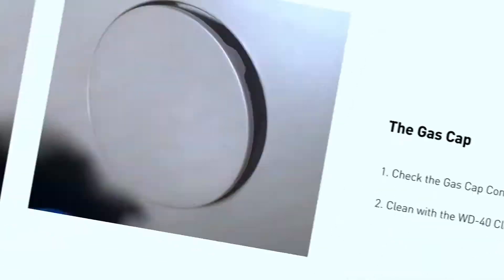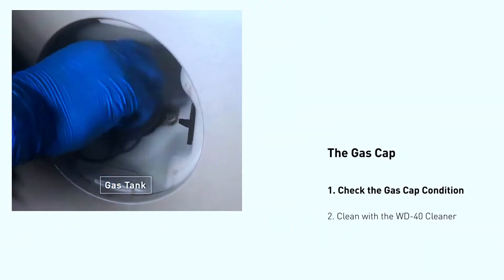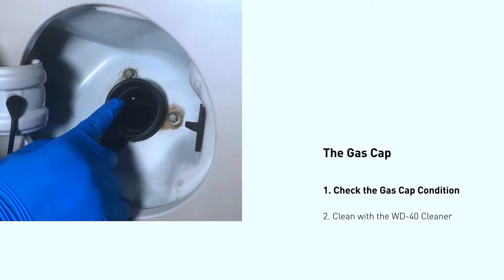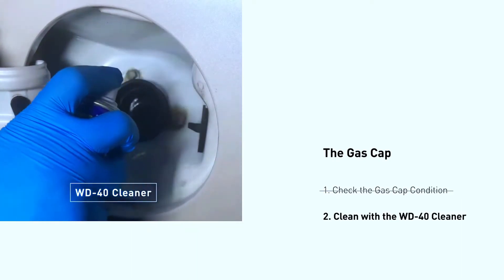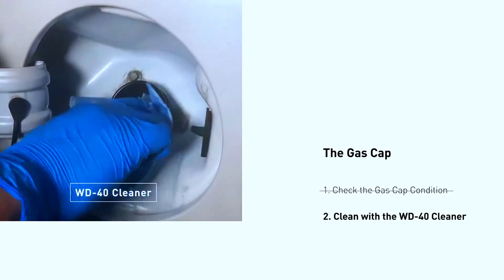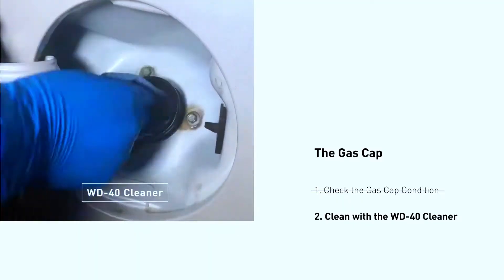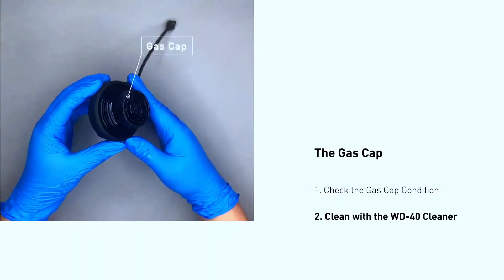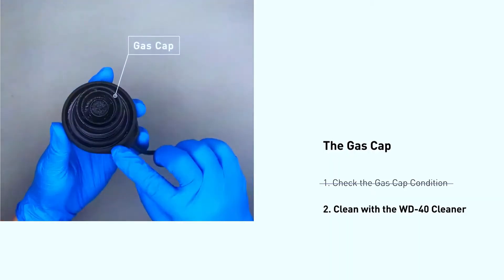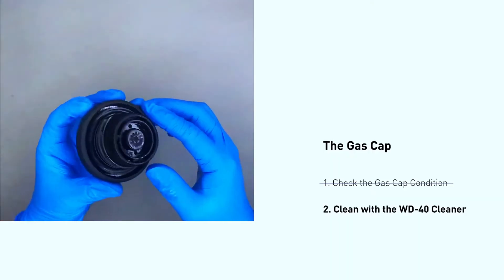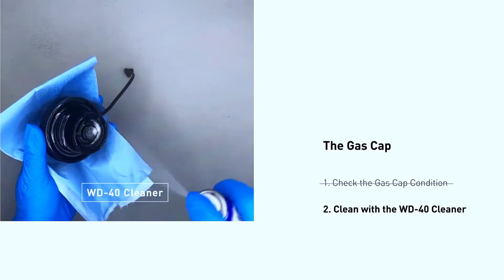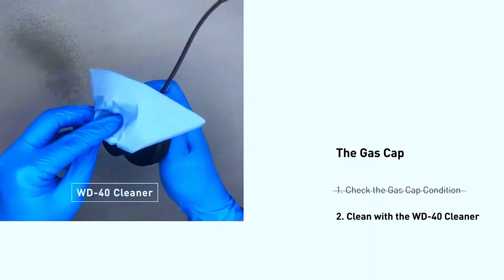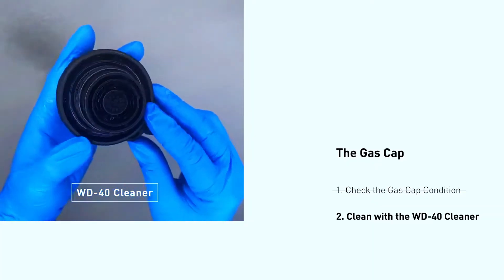First, check the gas cap. Turn off your car and open the gas tank. Inspect the gas cap gasket for any tears or damage. Tighten the gas cap firmly — most cars click when it's on snug enough. Start the car and see if the code goes away. You may need to drive for a short while for the system to reset.